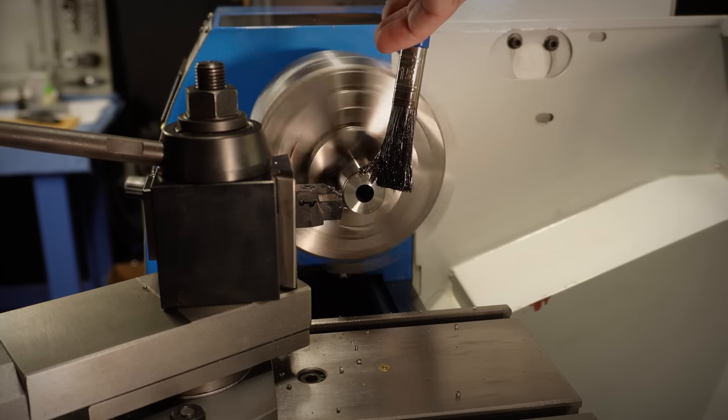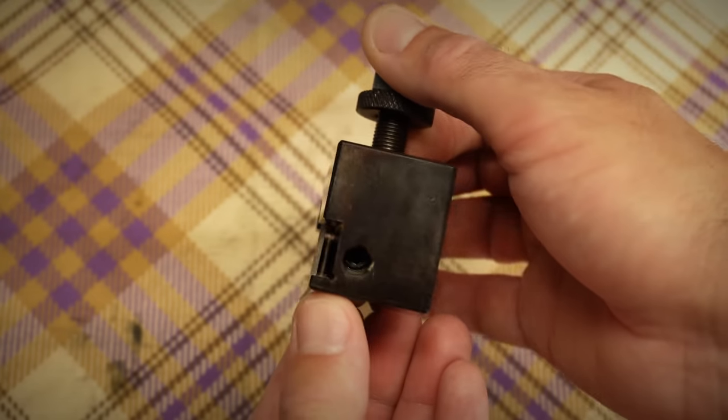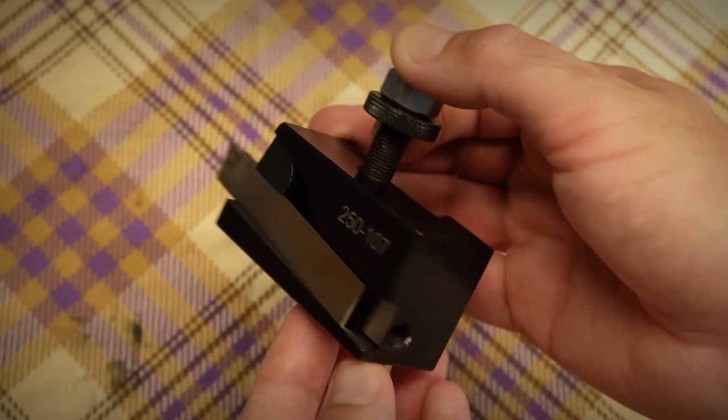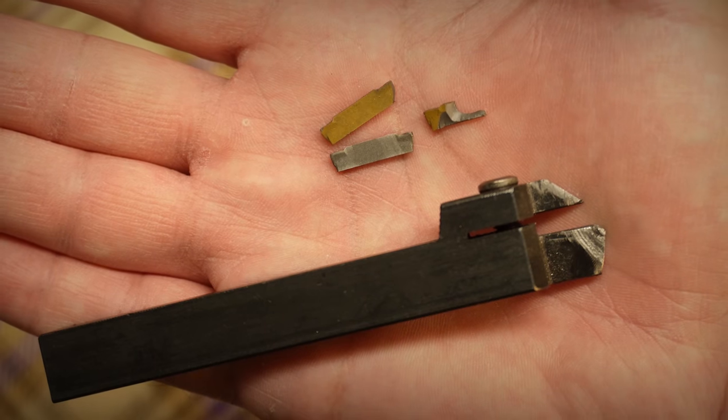Parting steel on my lathe has been challenging from the beginning. I started with an HSS blade that somehow had a tendency to walk off of the tool holder and jam itself into the work when I least expected it. Then I changed to carbide but I have broken more inserts and tools than I'd like to admit.